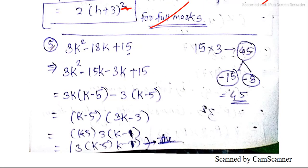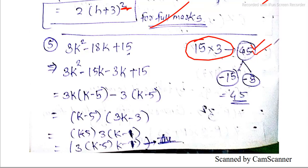The question is 3k² - 18k + 15. Here, 15 multiplied by 3 equals 45 as the product. The sign will be positive. We will proceed with the factoring.